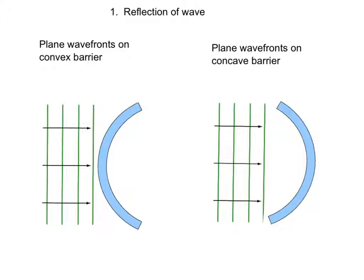First wave phenomenon is reflection of wave. First, let's look at plane wave fronts incidence on a plane barrier. By law of reflection, the angle of incidence is equal to angle of reflection. Therefore, the reflected wave is along this direction.